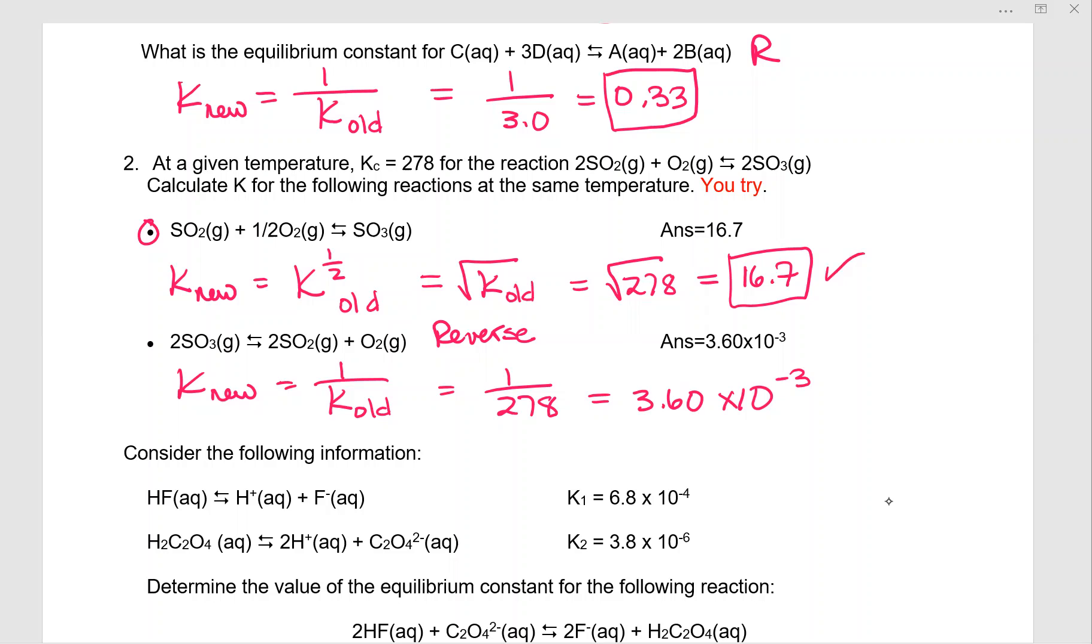In the next one that you're supposed to figure out the value of K for, we've reversed the reaction. So K new is 1 over K old. So 1 over 278 is 3.60 times 10 to the negative third.